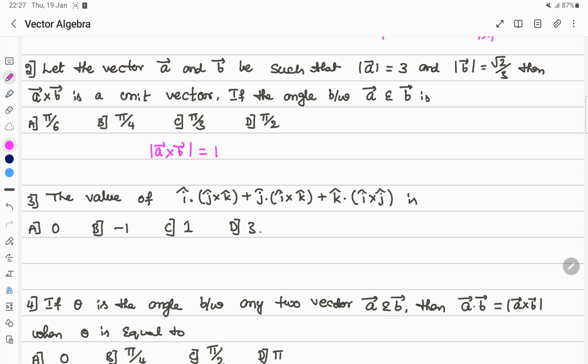These two values are also given. Then apply the formula: theta equals sin inverse of magnitude of a cross b divided by magnitude of a times magnitude of b. Apply this formula: it is sin inverse of a cross b equals 1.